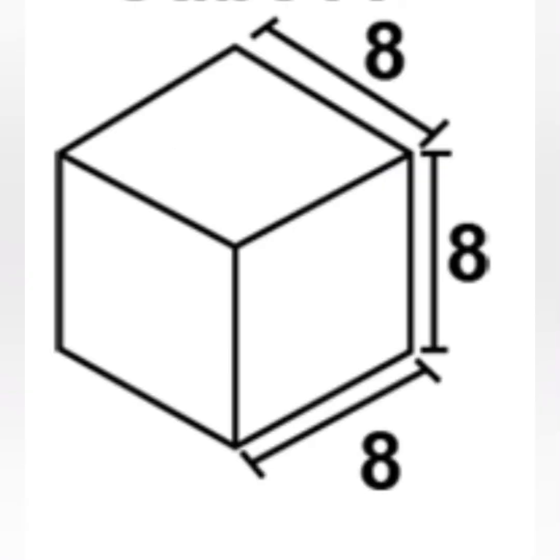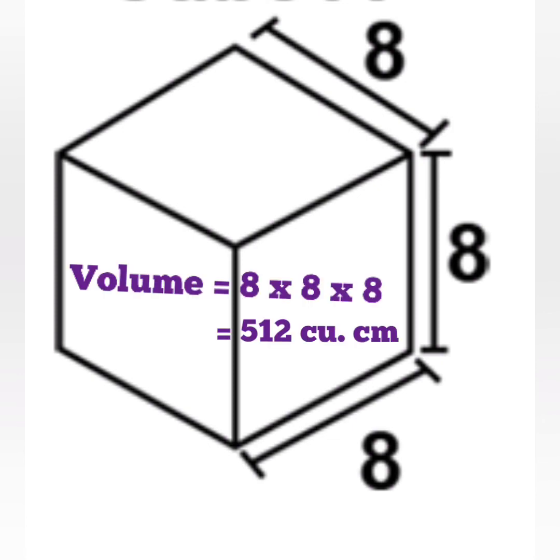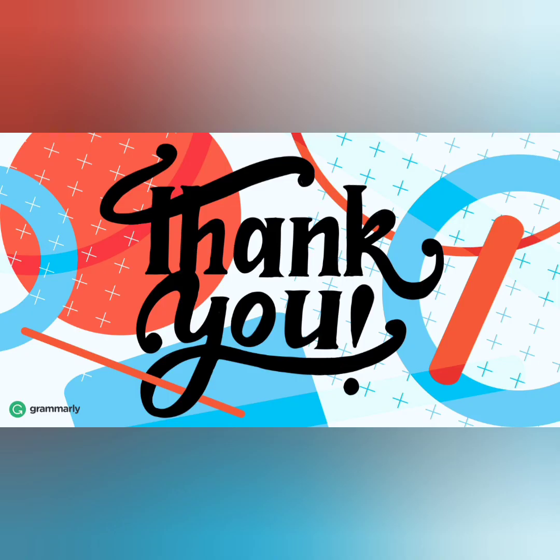Here this cube is of length 8 cm. That is all the sides of the cube are equal. So s into s into s will give us 512 cubic cm or cm³.